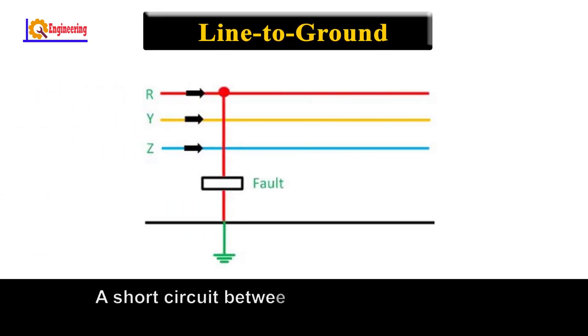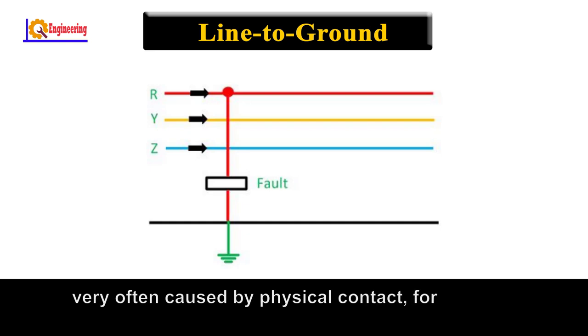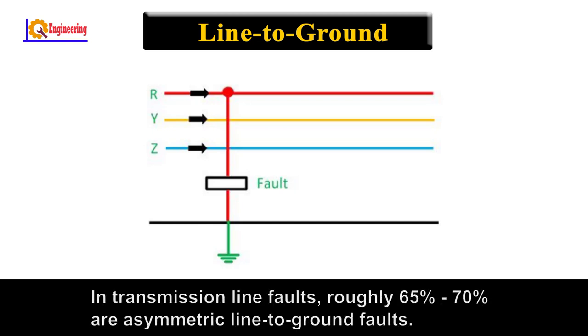Line-to-ground: A short circuit between one line and the ground, very often caused by physical contact, for example, due to lightning or other storm damage. In transmission line faults, roughly 65% to 70% are asymmetric line-to-ground faults.